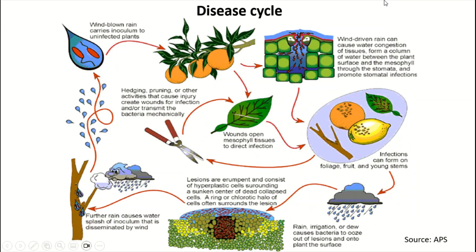Regarding the disease cycle of citrus canker, infection can form on the foliage, fruit, and young leaves. When it rains or irrigation water is applied, bacterial ooze comes out from the surface of the plants. The lesions are eruptive and consist of hyperplastic cells surrounding a sunken center of dead cells.